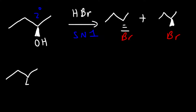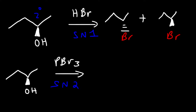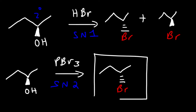If we start with the same alcohol but use PBr₃ instead of HBr, the reaction proceeds by an SN2 mechanism. We get inversion of configuration at the chiral center, so the bromine atom ends up on the wedge as opposed to the dash — we only get one of the two stereoisomers.